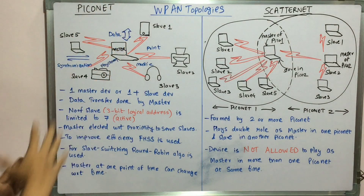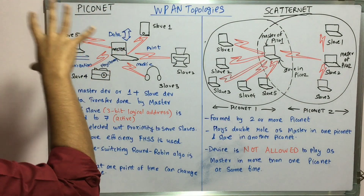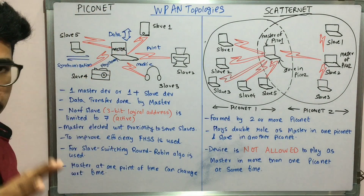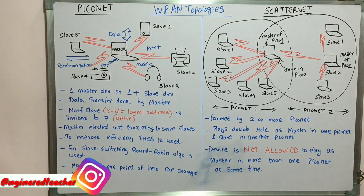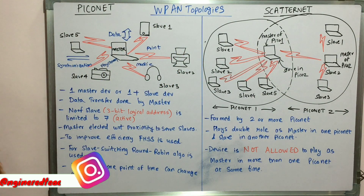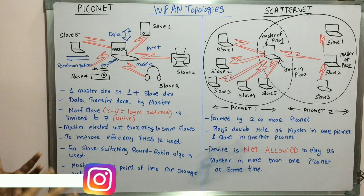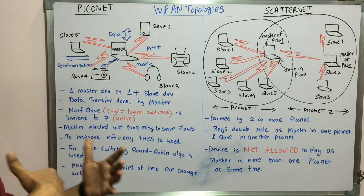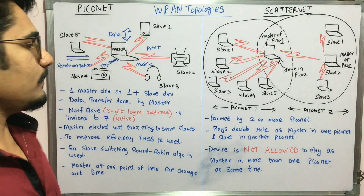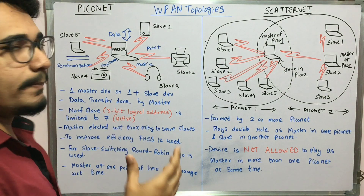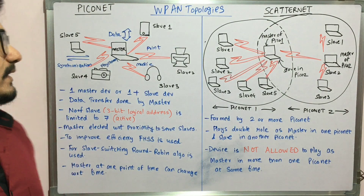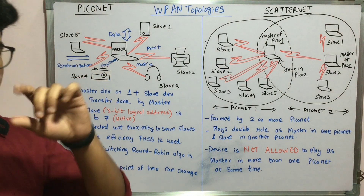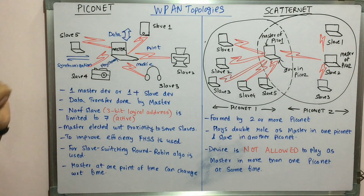Let's begin first with the Piconet. In this, you have a centralized master and then you have n number of slave devices which are connected to this master at one point of time. There is one master device and there could be one or more slave devices — either one slave device or n number of slave devices, and that n is limited. Data transfer is done by the master device.